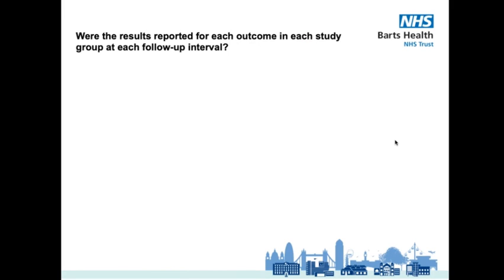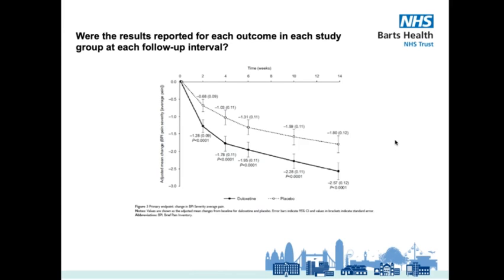Our next consideration point asks: were the results reported for each outcome in each group at each follow-up interval? Yes, we can clearly see this charted for the primary outcome on figure 3 on page 814. If you're reading a paper where this isn't the case, that's obviously a big red flag and you have to wonder why that data isn't being reported.